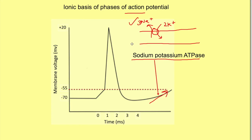So that's all for the ionic basis of the phases of action potential. In summary: the depolarization phase occurs due to entry of sodium ions; the repolarization phase occurs due to efflux of potassium ions from the cell; the hyperpolarization phase occurs due to delayed closure of potassium channels causing more efflux of potassium ions; and the potential is brought back to resting membrane potential by the sodium-potassium ATPase. Thank you for watching — if you liked the video, press the like button, share it, and don't forget to subscribe to the channel Physiology Open.